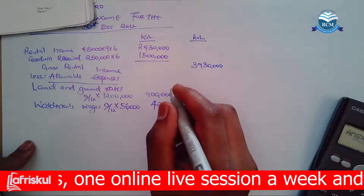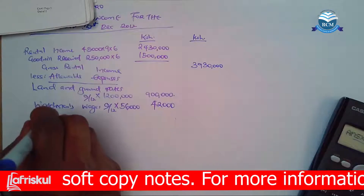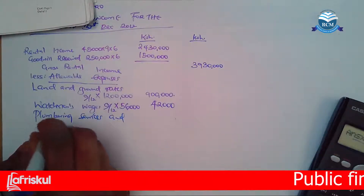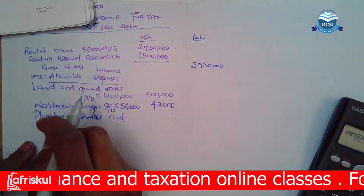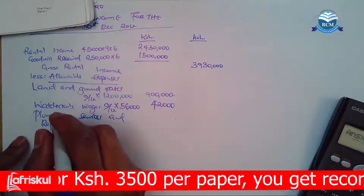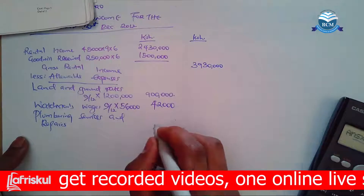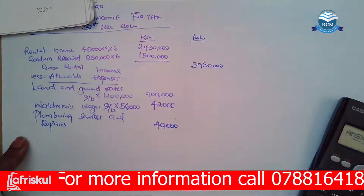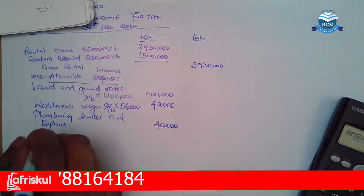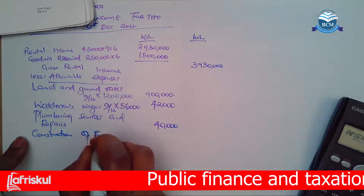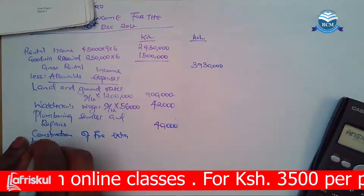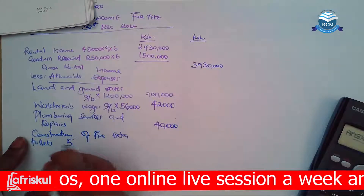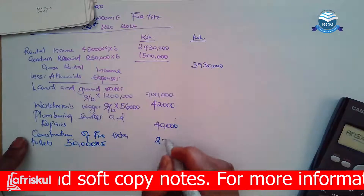Also, we have plumbing services and repairs, amounting to 40,000 paid in August. You just take 40,000 — you don't apportion that because it's not covering the full period. Then we have construction of 5 extra toilets at 50,000 each in October. So you take 50,000, multiply by 5, and get 250,000.